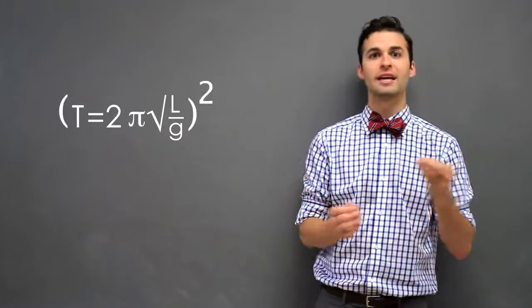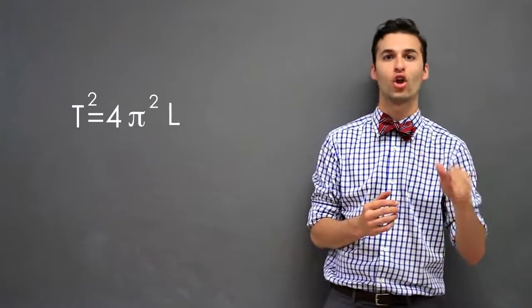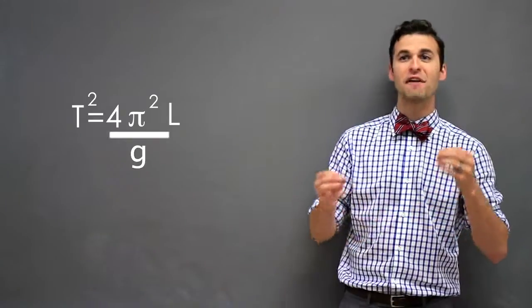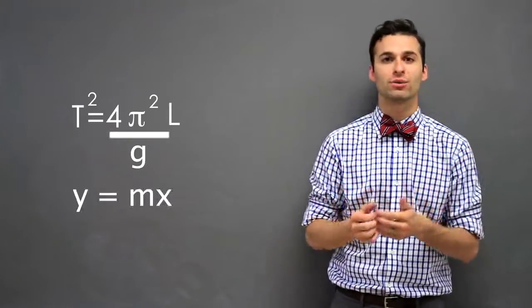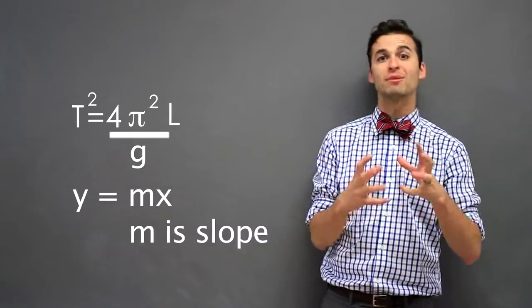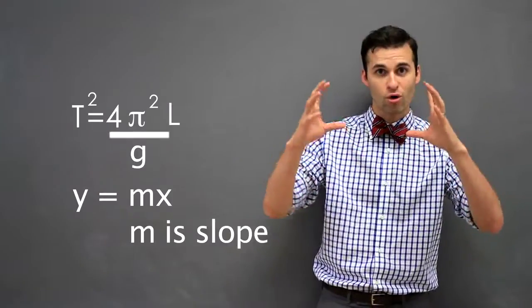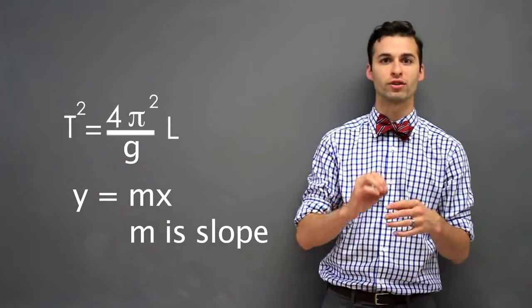If I square both sides of the equation, it's T squared equals 4 pi squared times L all over G. If I linearize this equation in the form y equals mx, m is the slope of my graph, and m is just a number. It is everything that is constant. So group everything that is a constant together, 4 pi squared over G.